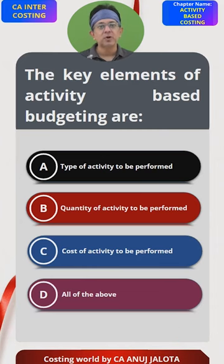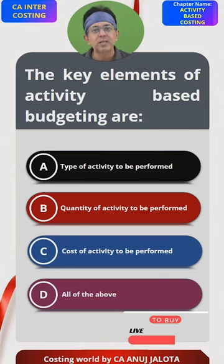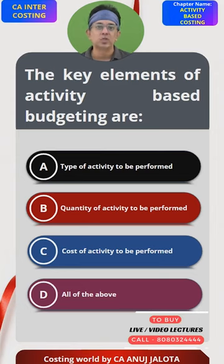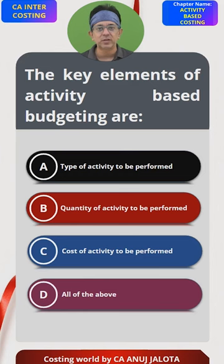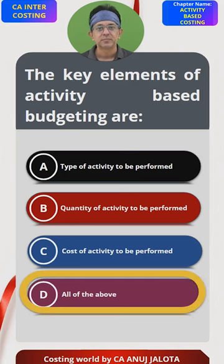So therefore, A, B, and C — all of them are required to find out the activity-based budget cost. So the answer should be D. That's the correct answer.